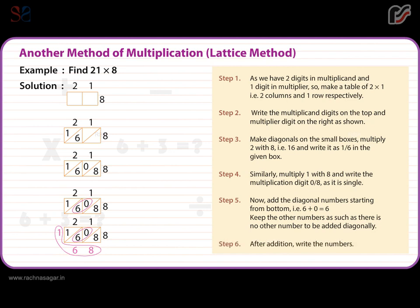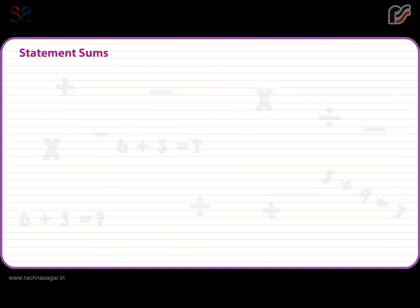Step 6: After addition, write the numbers. Hence, 21 multiplied by 8 is equal to 168.